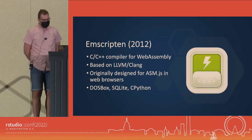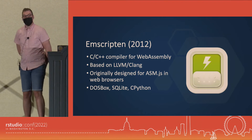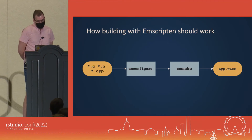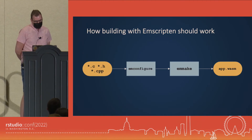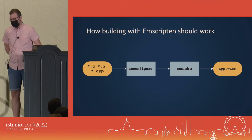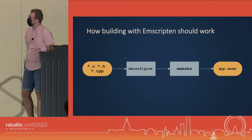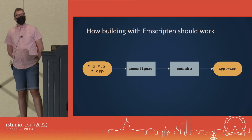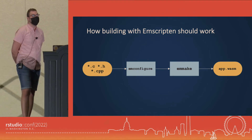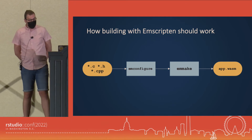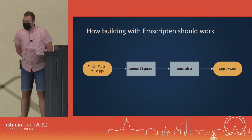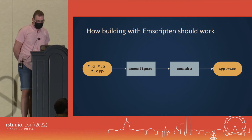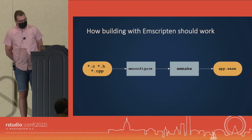Projects like DOSBox and others have used it — spoiler alert, sorry Winston. Emscripten should work like this: you give it two commands, EM configure and EM make, you give it C code, and a WebAssembly package falls out. When it works it's absolute magic — it's incredible. You get some C code and it runs online.